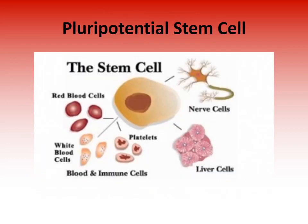The pluripotential stem cell is the one main cell in the red bone marrow that gives rise to all cells in the blood — including red blood cells, white blood cells, platelets, as well as liver cells and nerve cells. It does so by undergoing mitosis.